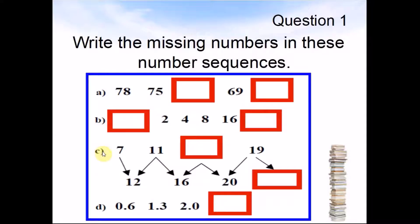C: 7 goes to 12, 11 goes to 12 and 11 goes to 16. Something goes to 16 and something goes to 20. 19 goes to 20 and 19 goes to something. D: 0.6, 1.3, 2.0 and something. What is the sequence?